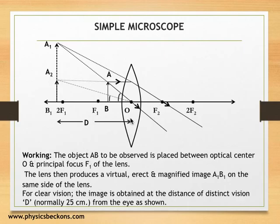The working of this simple microscope: the object AB to be observed is placed between optical center O and principal focus F₁ of the lens. The lens then produces a virtual, erect and magnified image A₁B₁ on the same side of the lens. As stated earlier, for clear vision, the image is obtained at the distance of distinct vision, capital D, normally 25 centimeter from the eye.